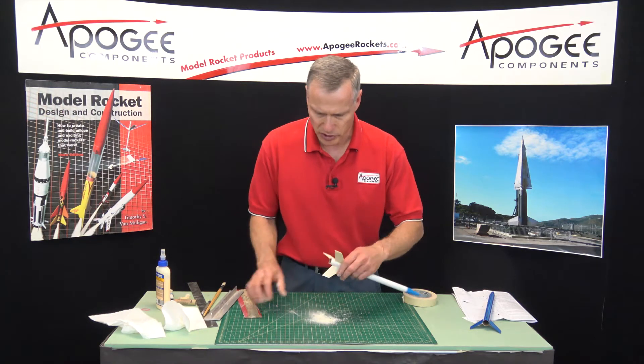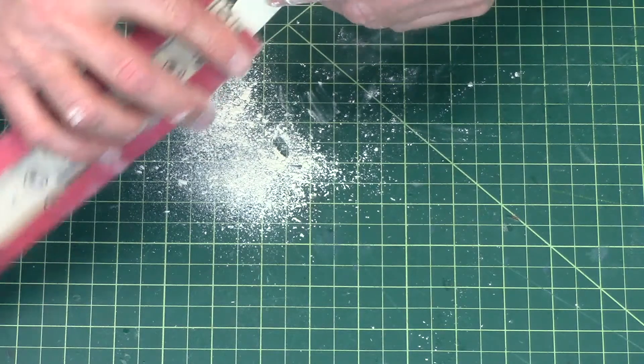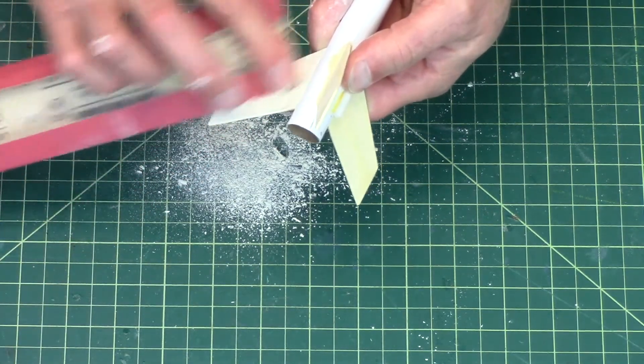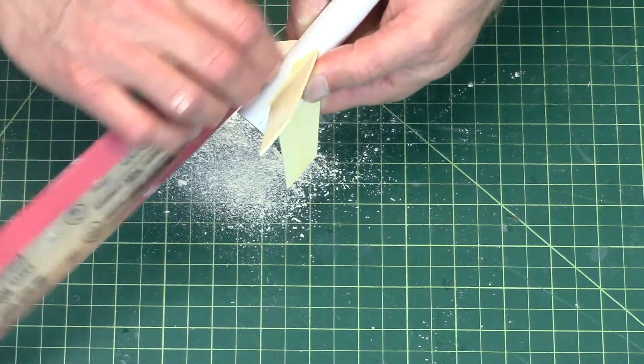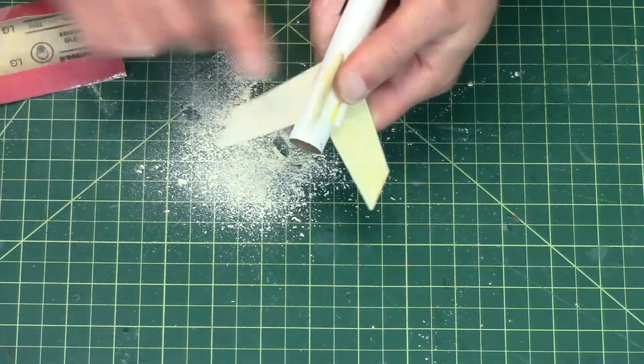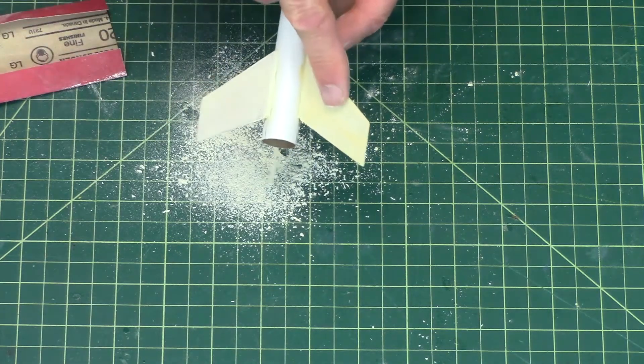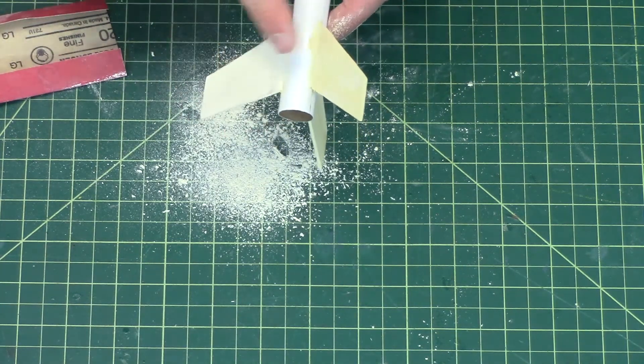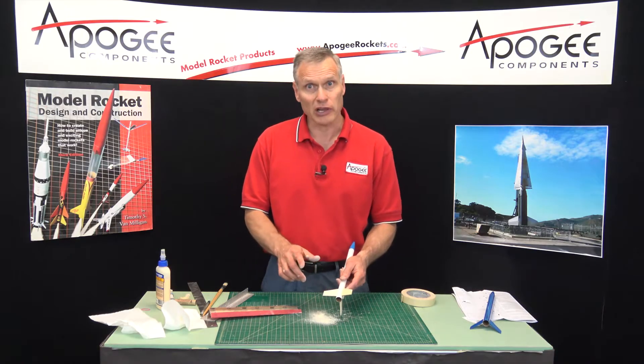And then we'll do the trailing edge. All right. So that is the before and this is the after. Look how much nicer that looks and how smooth it is. And that's going to make the rocket fly a lot higher.